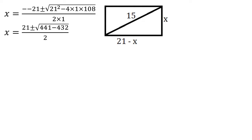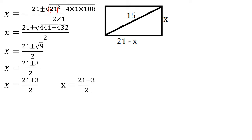Substituting: plus 21, plus or minus root of 21 squared minus 4 times... 21 squared is 441, minus 432, divided by 2. 441 minus 432 equals 9, root of 9 is 3. So x equals 21 plus or minus 3 by 2. That gives us 21 plus 3 by 2 equals 24 by 2 equals 12, and 21 minus 3 by 2 equals 18 by 2 equals 9.